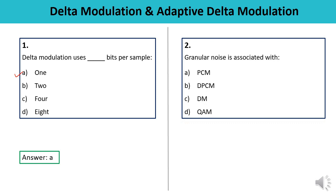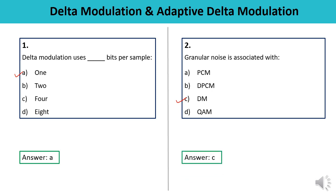Question 2: Granular noise is associated with PCM, DPCM, DM, or QAM? Granular noise is associated with Delta Modulation, that is DM. So the answer is C. In Delta Modulation, there are two drawbacks — two different kinds of noise which may occur: granular noise and slope overload distortion.